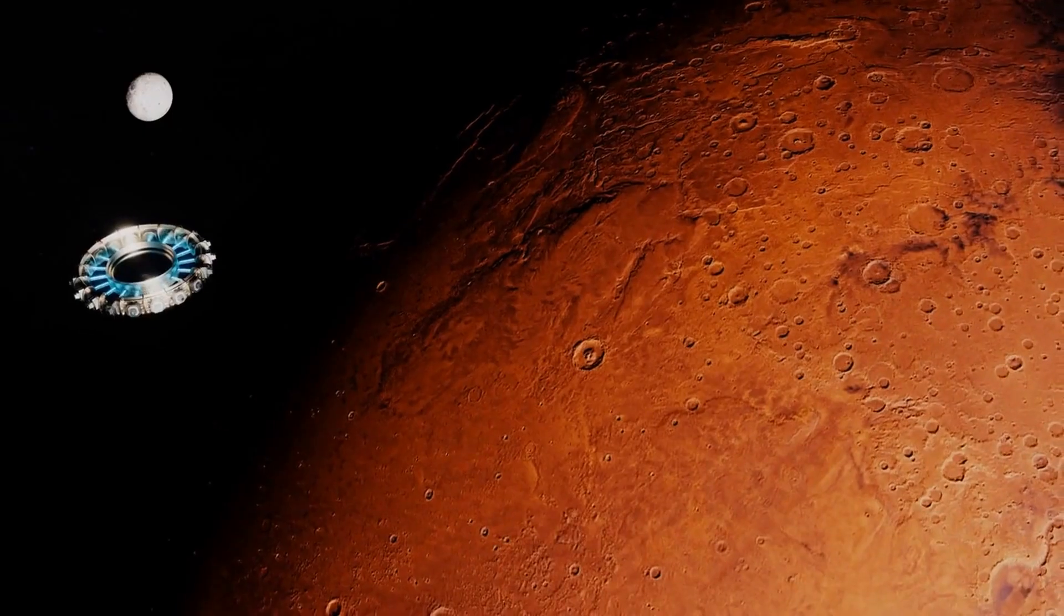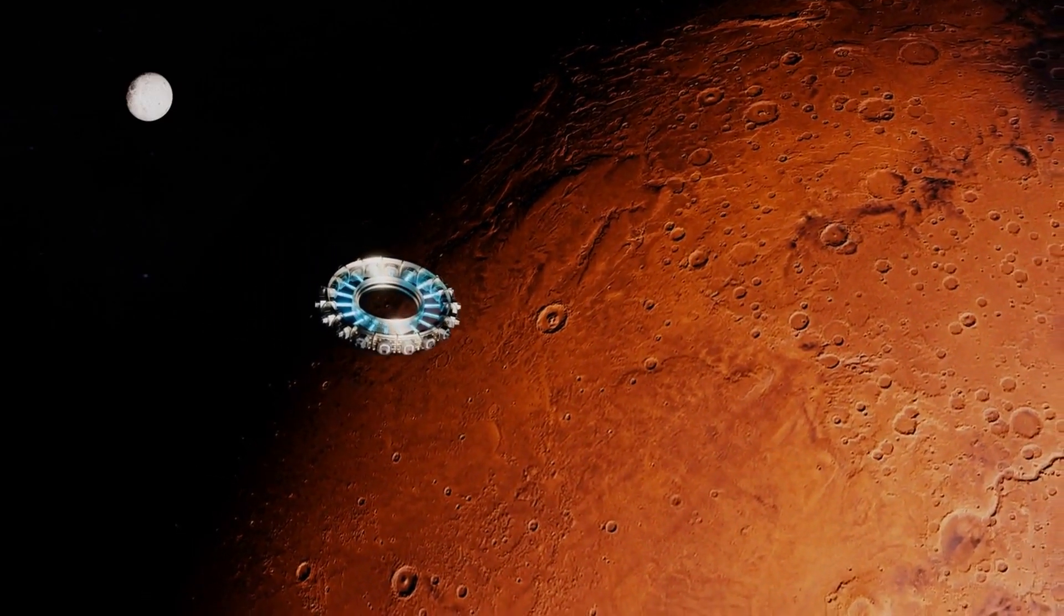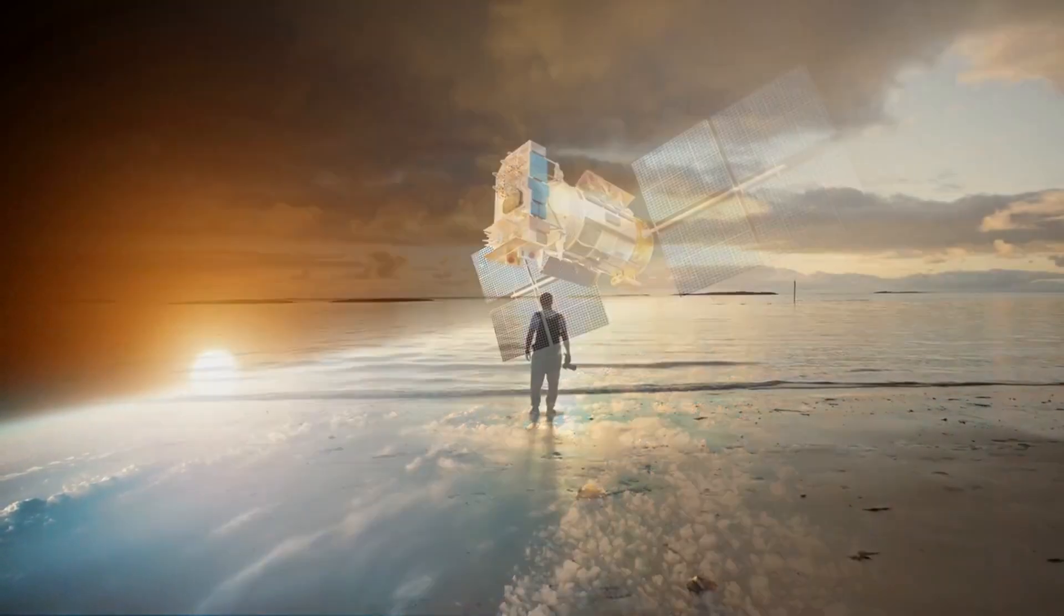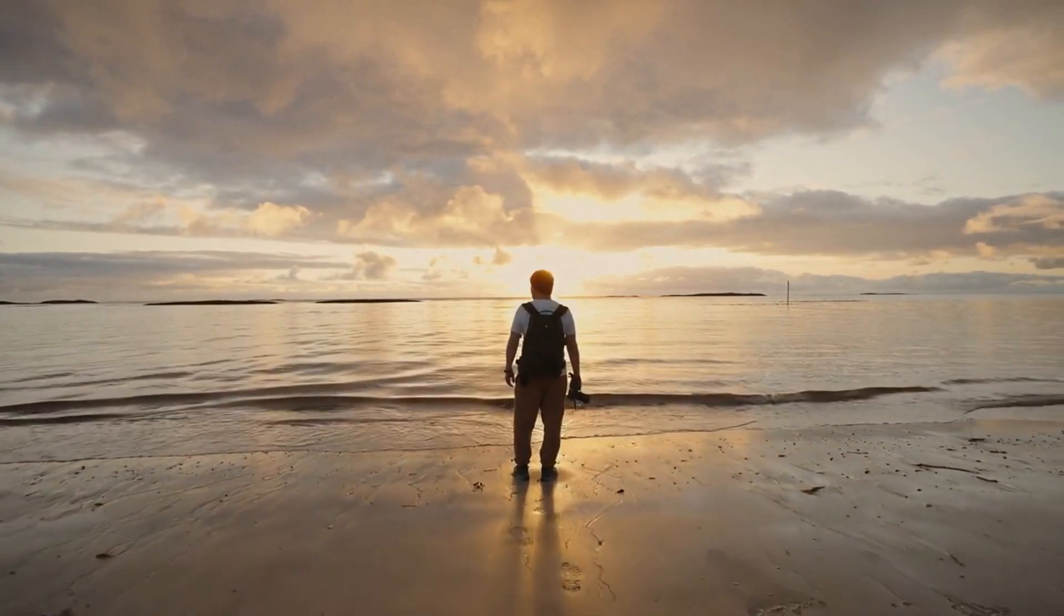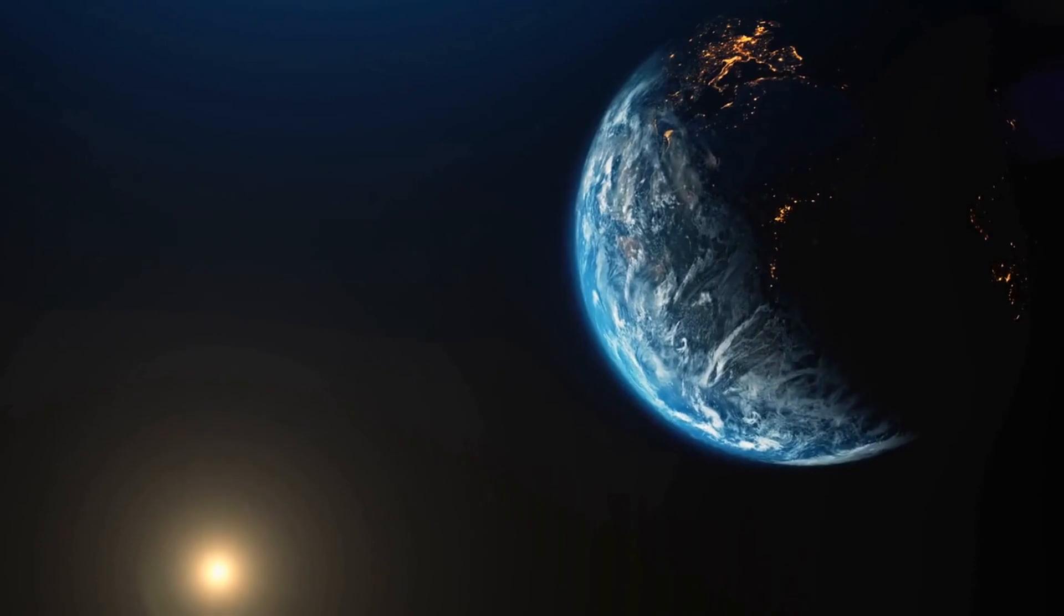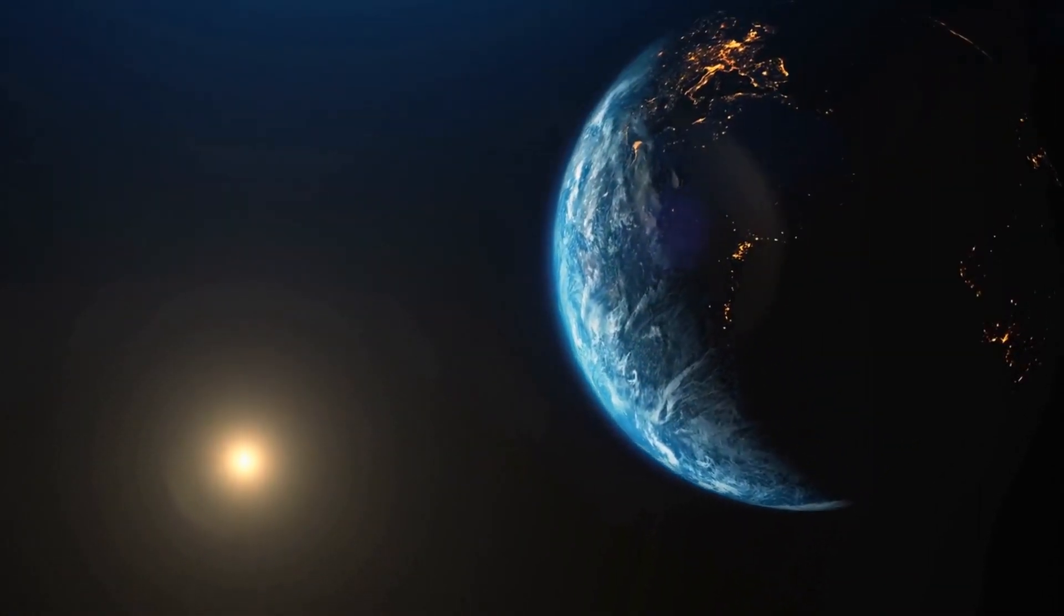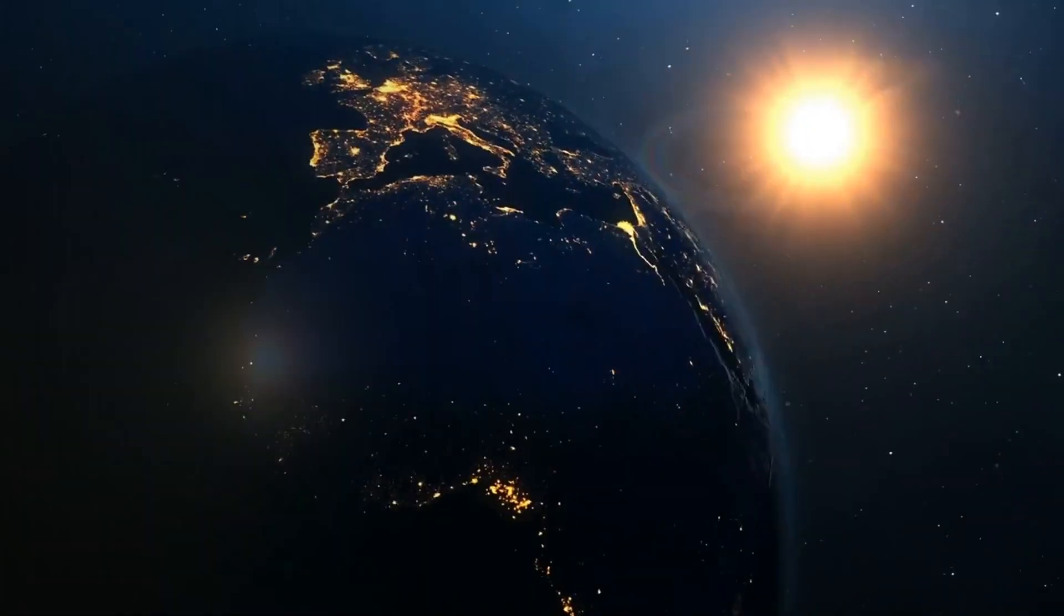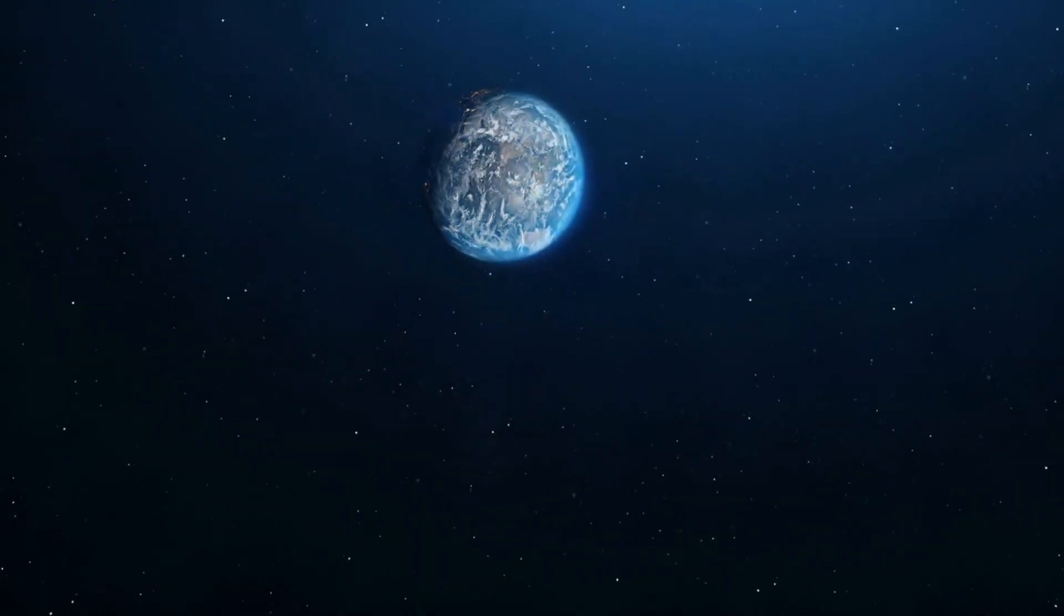This is supported by scientific evidence and observations made by astronauts and satellites. The photos of Earth from space are fake. This argument is often made by flat earthers who believe that the Earth is flat because they cannot see the curvature from their vantage point on the ground. However, there is ample photographic and video evidence from space agencies around the world that show the Earth as a round planet. Satellites, rockets, and astronauts have all taken pictures that clearly show the Earth's curvature.